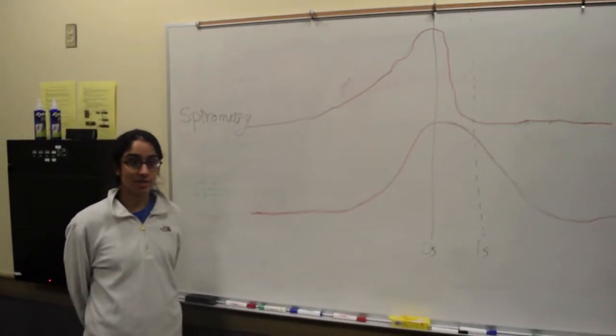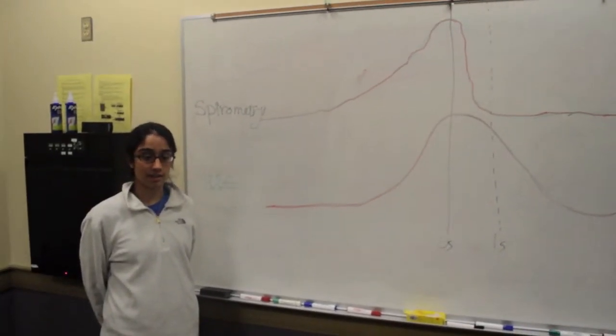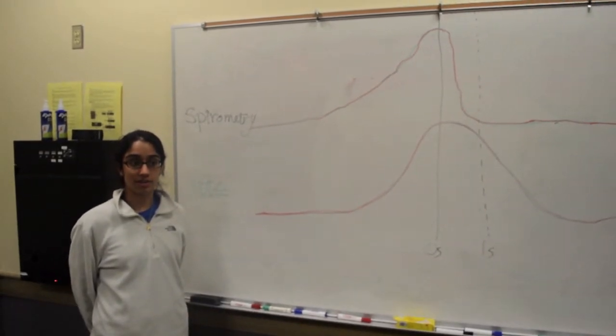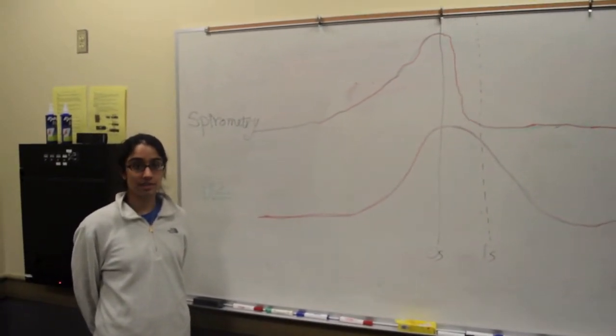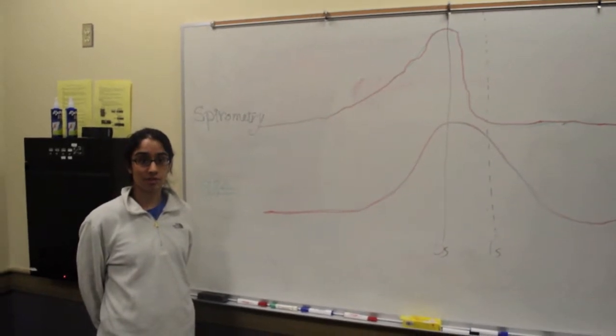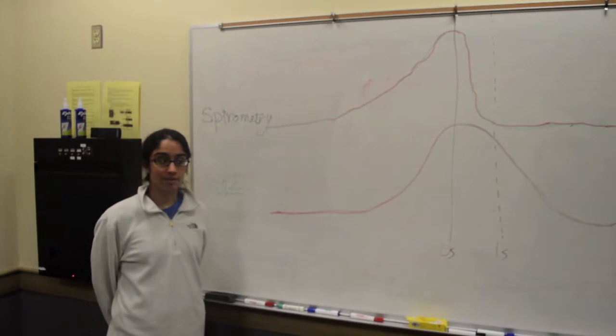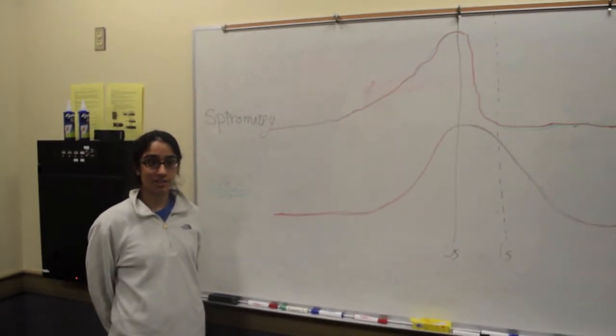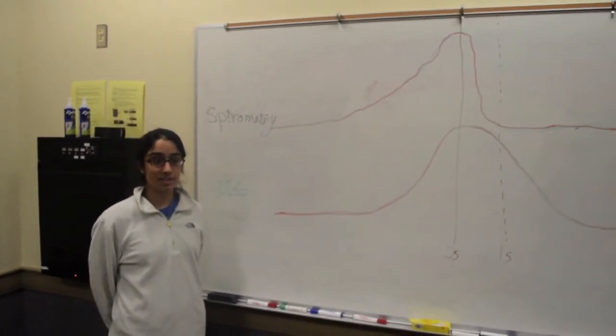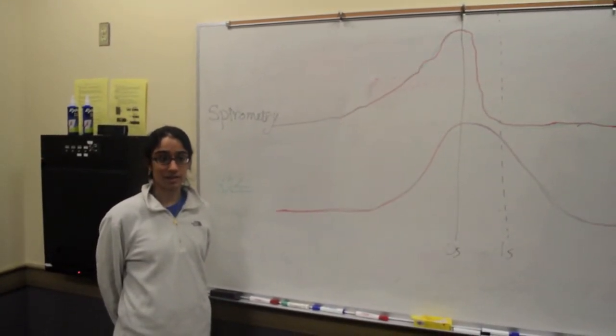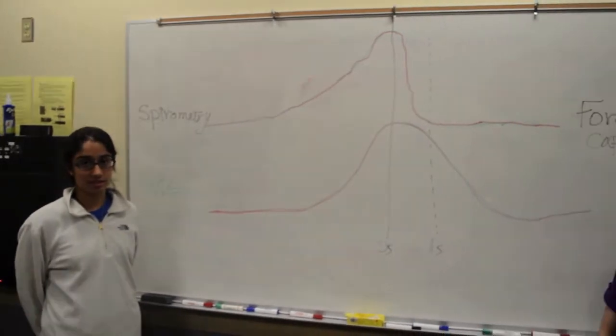Spirometry is a technique used to measure the amount of air inhaled and exhaled. To detect asthma, we often look at the forced vital capacity, which is a maximum inspiration followed by a maximally forced expiration. From this, you can detect the forced expiratory volume, which is the maximum expiration from the forced vital capacity in a certain amount of time, usually 1 second.